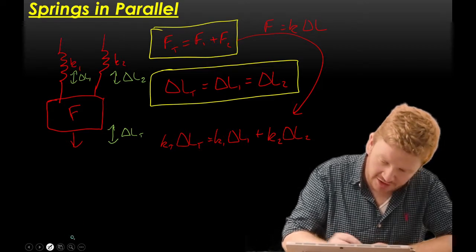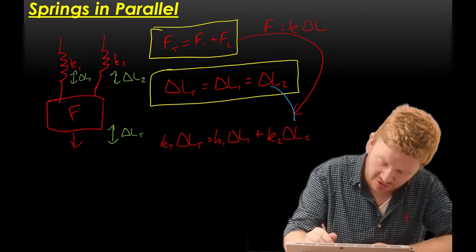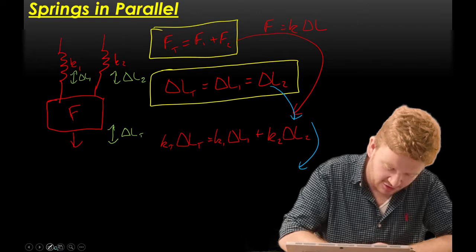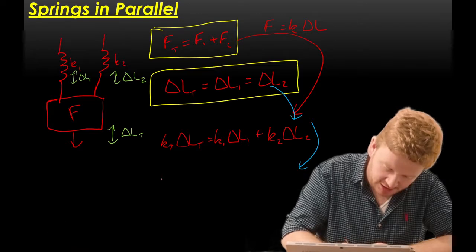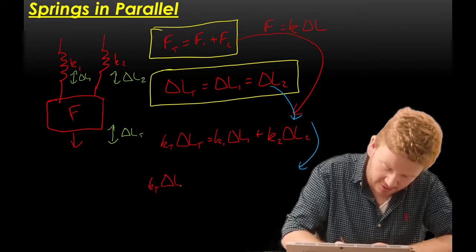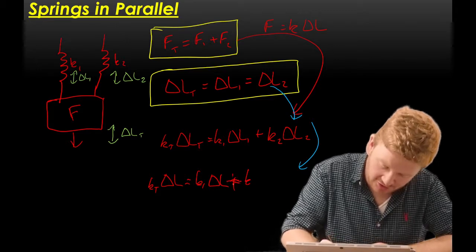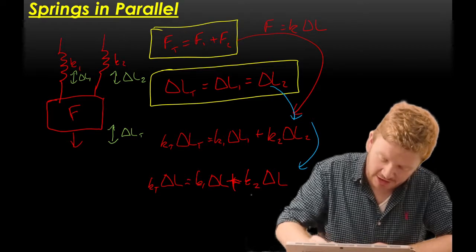Now, what we said from earlier is that all of these extensions are the same. So I can again rewrite this equation now as kt delta L is equal to k1 delta L plus k2 delta L.